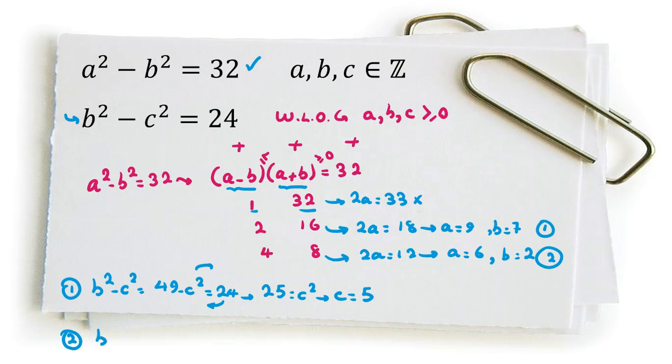Now if we consider the second case, b squared minus c squared equals 4 minus c squared, which equals 24. If we take this to the right side and this to the left side, 4 minus 24 is negative 20 equals c squared, which is impossible.